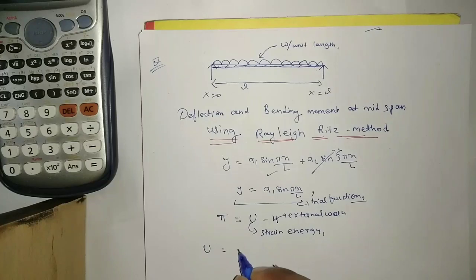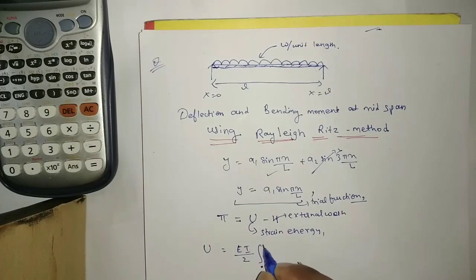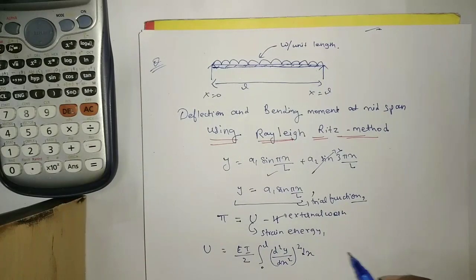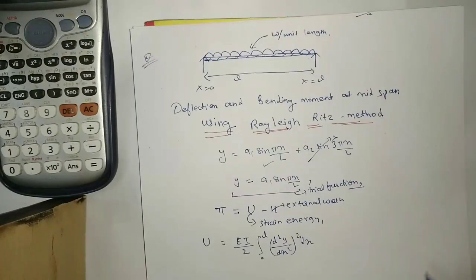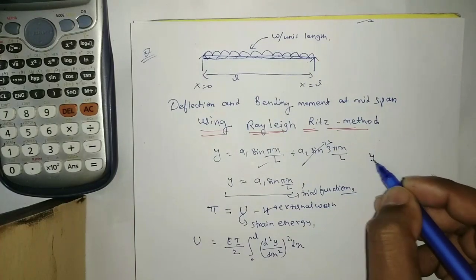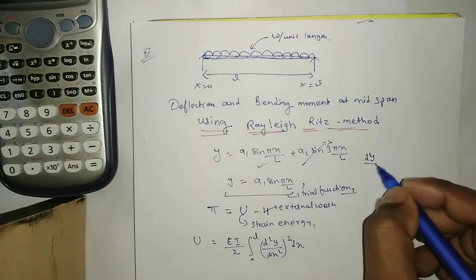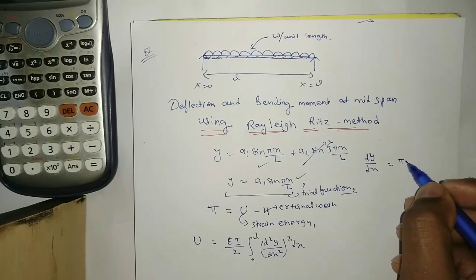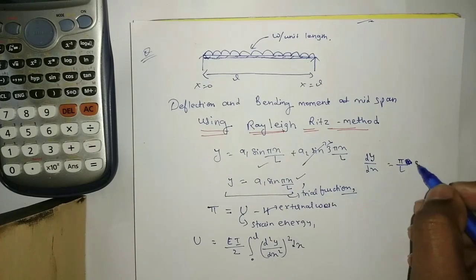The formula for the strain energy of this beam is: U = (EI/2)·∫₀ᴸ (d²y/dx²)² dx. We substitute the y value, and begin computing dy/dx from the trial function y = a1·sin(πx/L).